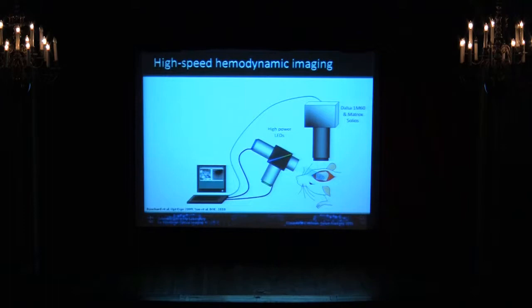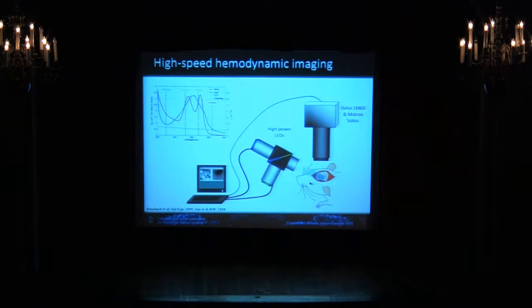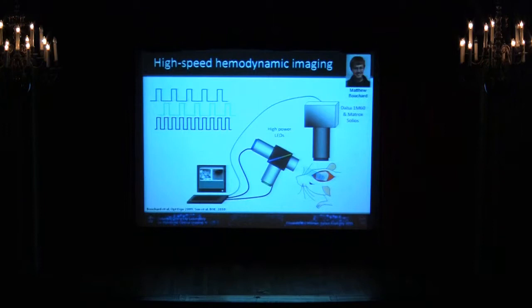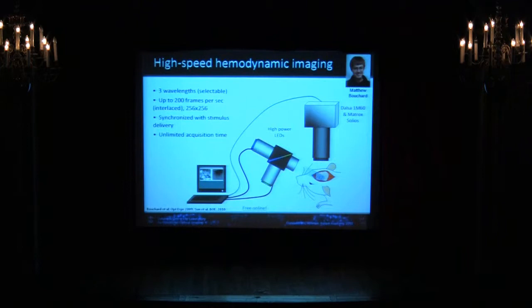So then we don't do fMRI anymore, and we ask what can we do to get much closer. We don't like blobs of 'this region's active' — we want to see what's really going on. We wanted really high-resolution and really high-speed imaging, which fMRI struggles with. Oxy- and deoxyhemoglobin have different absorption spectra, so by choosing different wavelengths — blue, green, yellow, red light — we have different sensitivities to each. We flash green and blue LEDs on and off in synchrony with the camera, allowing up to 200 frames per second, synchronization with stimulus delivery, and unlimited acquisition. We've put a recipe for building this system free online — it costs about $5,000 to assemble.